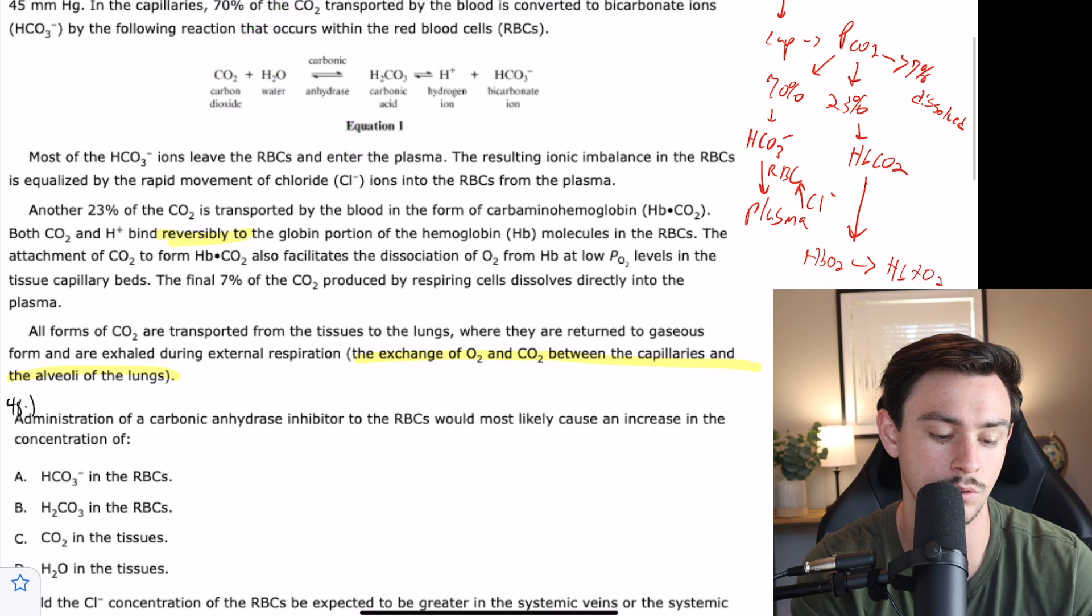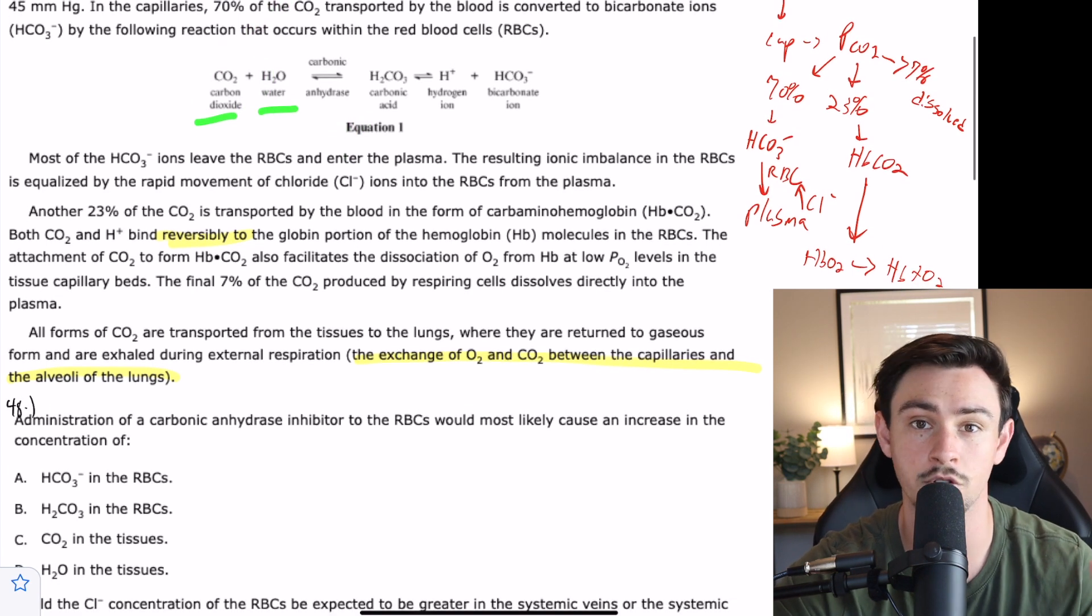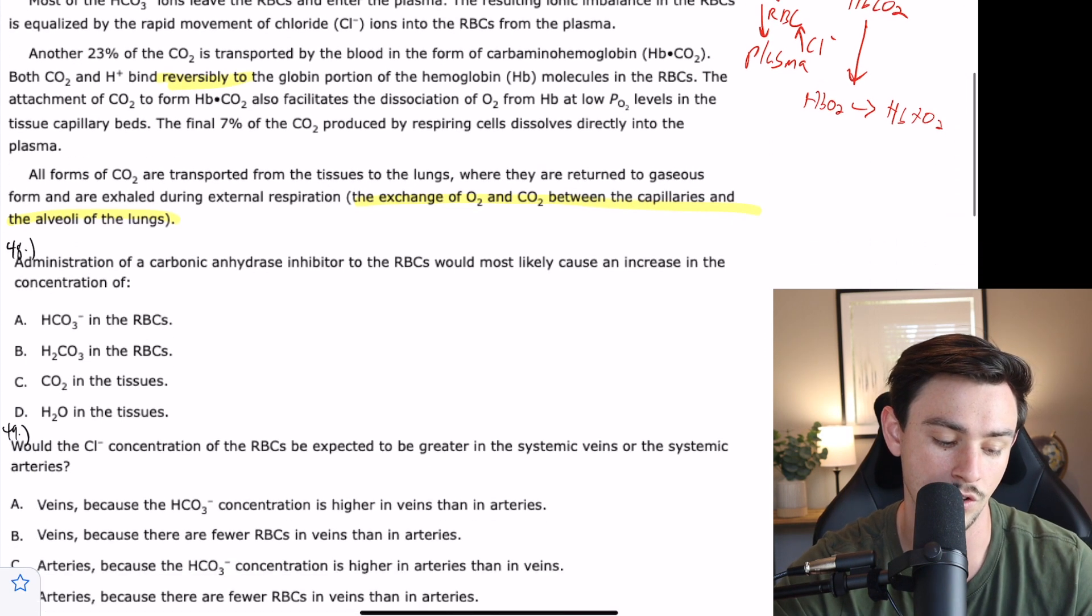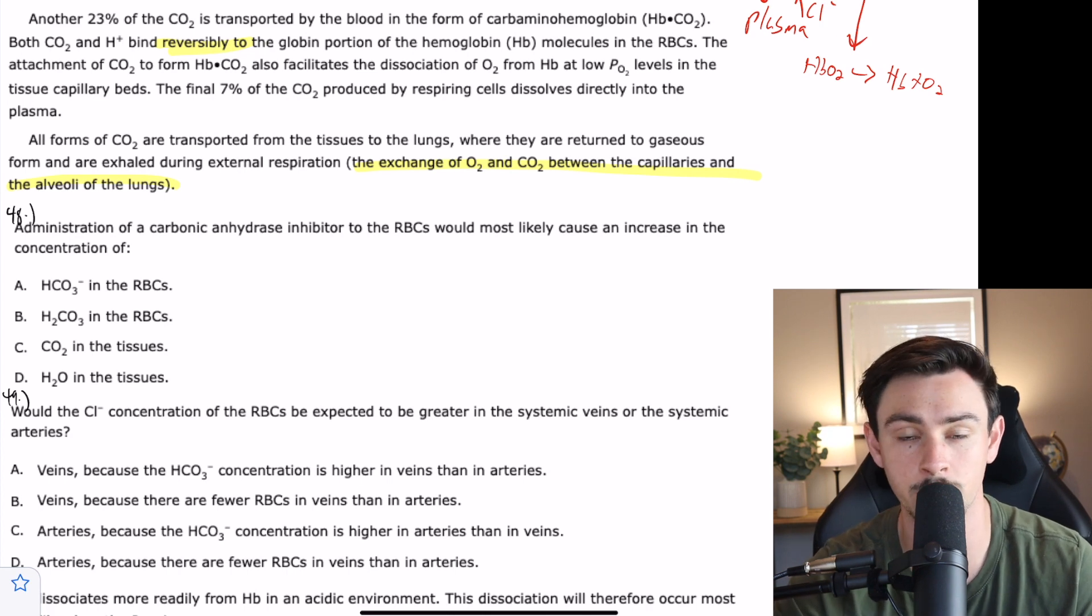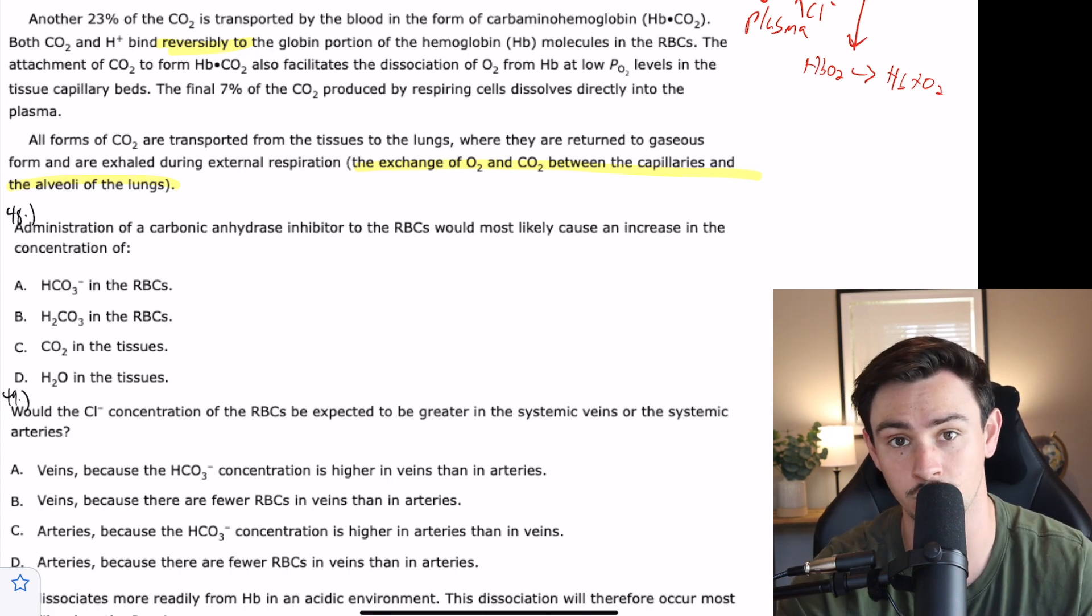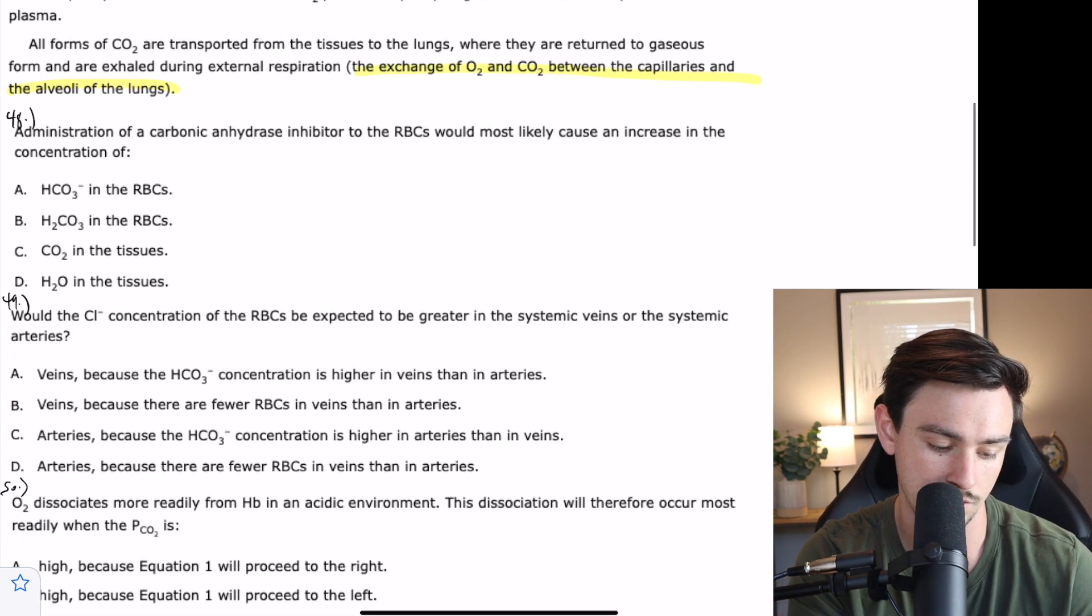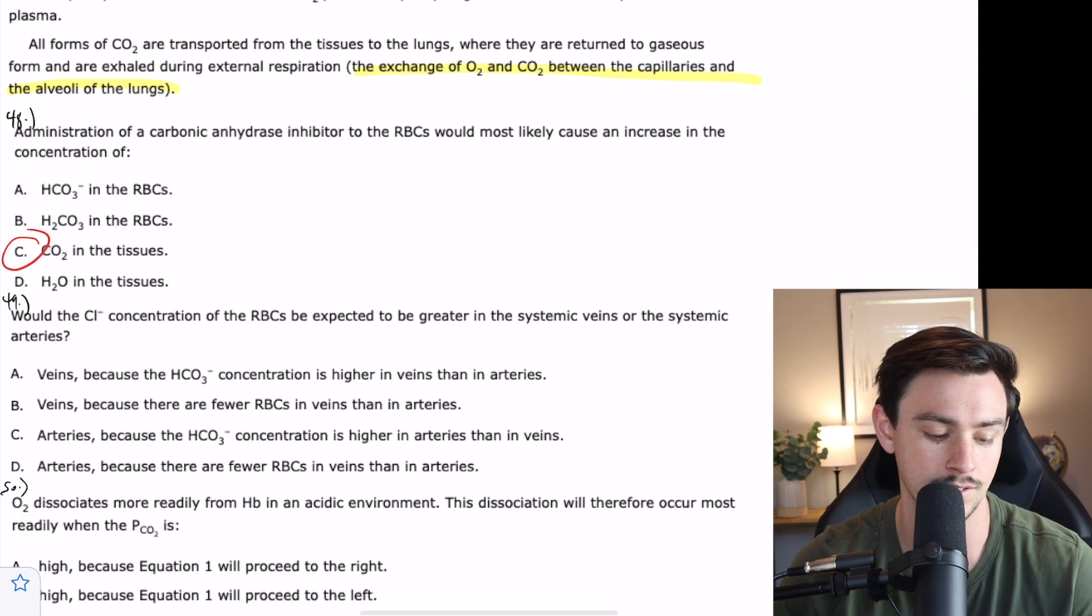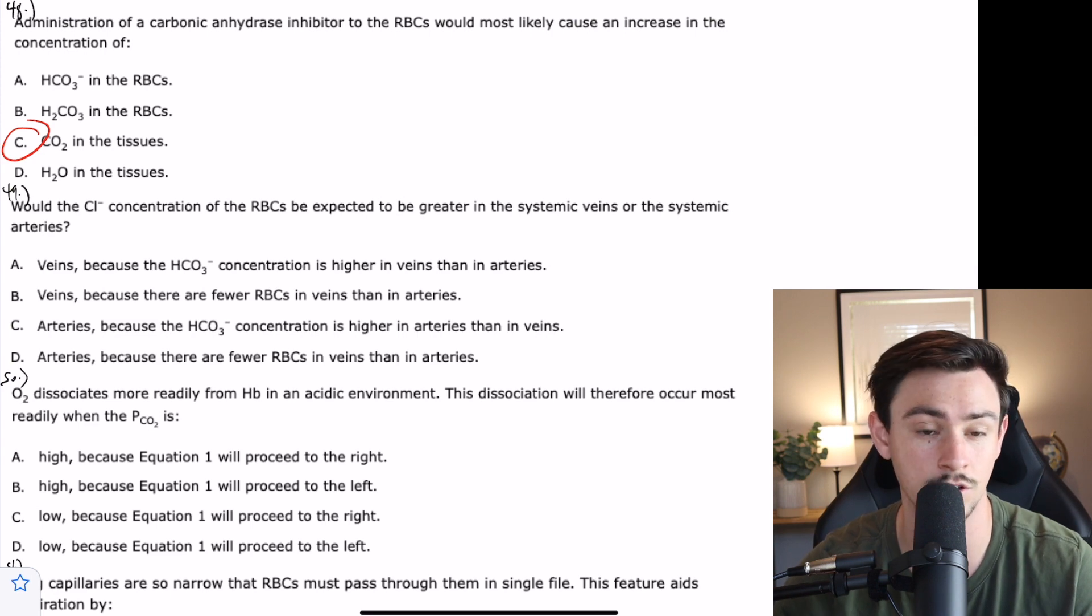D says water in the tissues. I think there's a pretty good argument for either one of these answer choices to be correct. However, I'm going to end up going with carbon dioxide because water is so ubiquitous and there's so many means of controlling it. Carbonic anhydrase is not one of the main factors that controls water. Those are going to be functions of like the kidney, the renin-aldosterone angiotensin system. So CO2 is the correct answer.